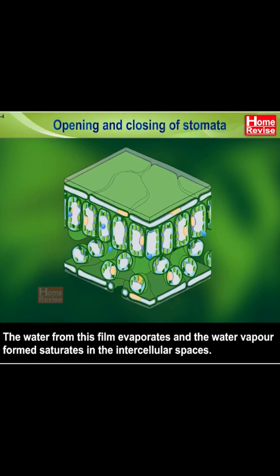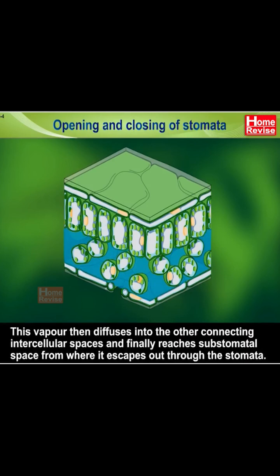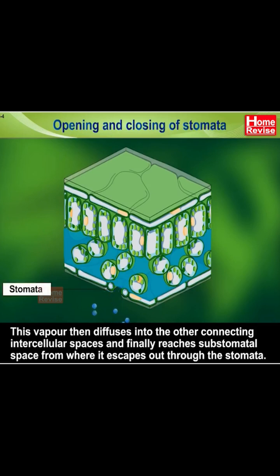The water from this film evaporates and the water vapor formed saturates in the intercellular spaces. This vapor then diffuses into the other connecting intercellular spaces and finally reaches substomatal space, from where it escapes out through the stomata.